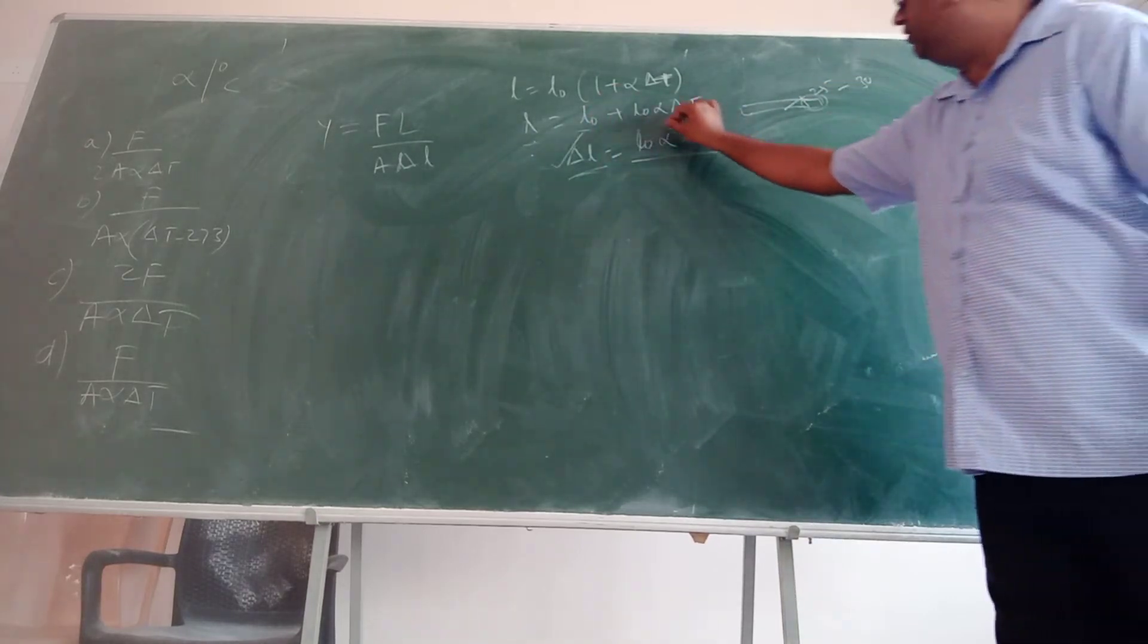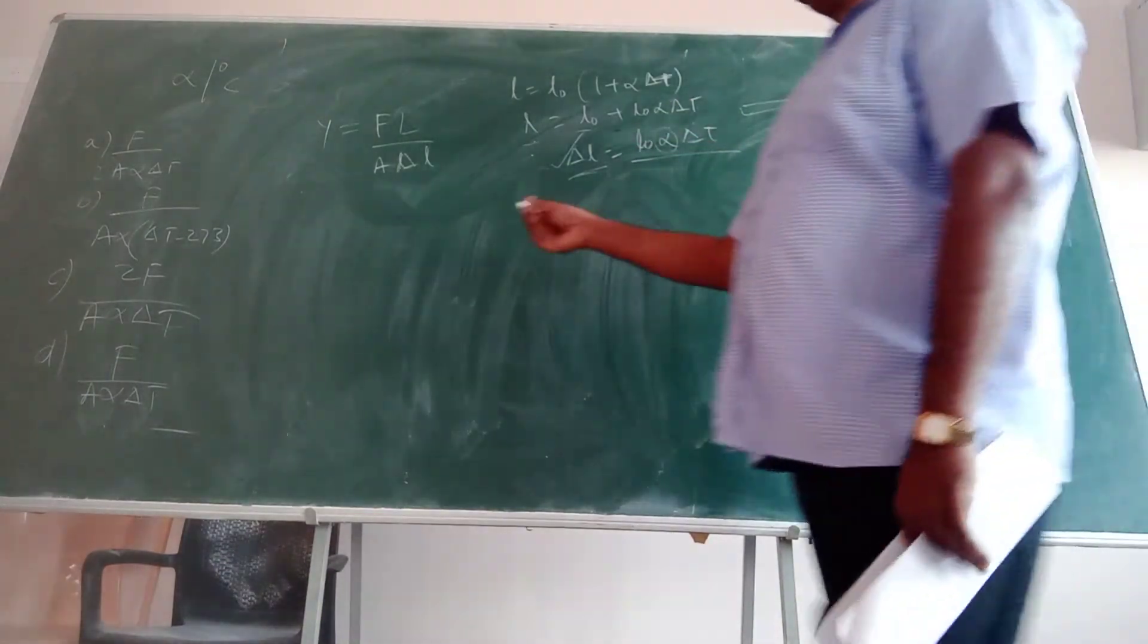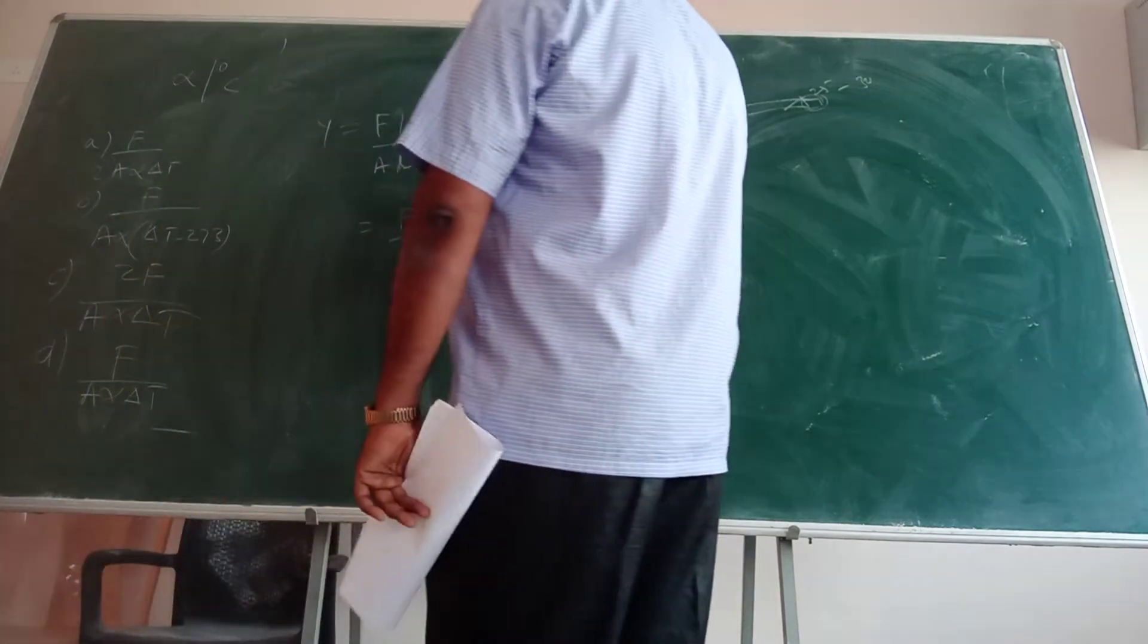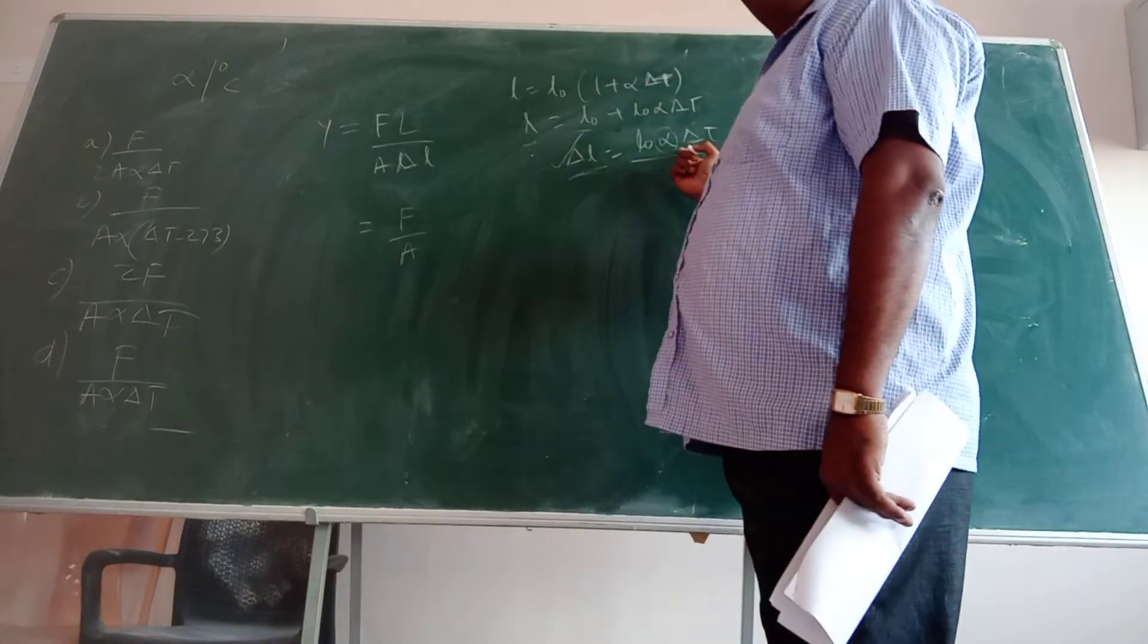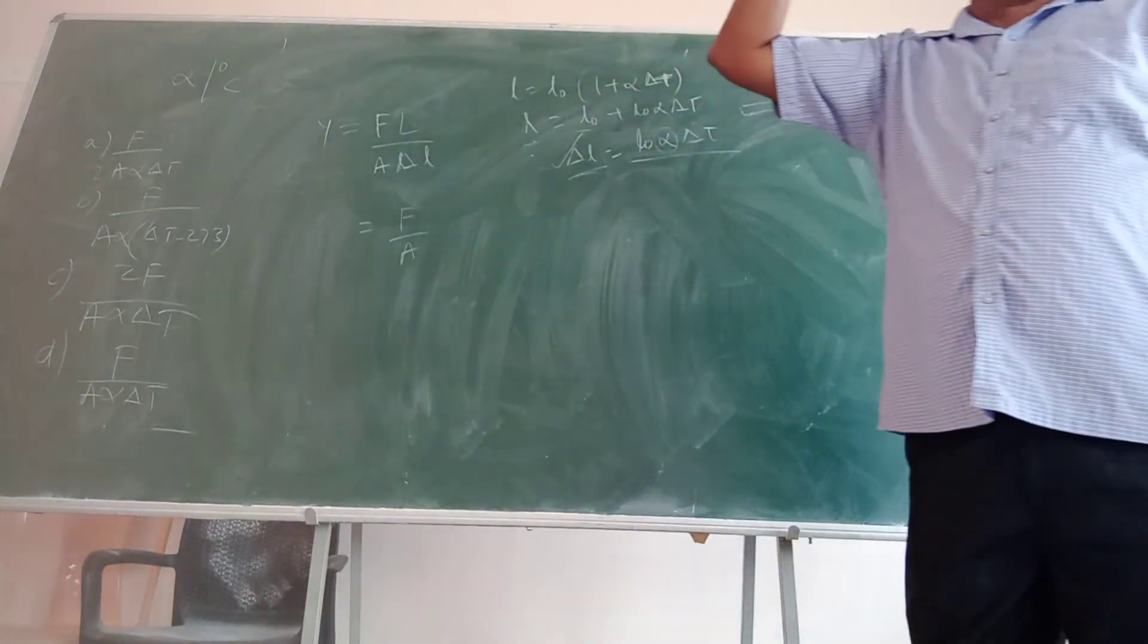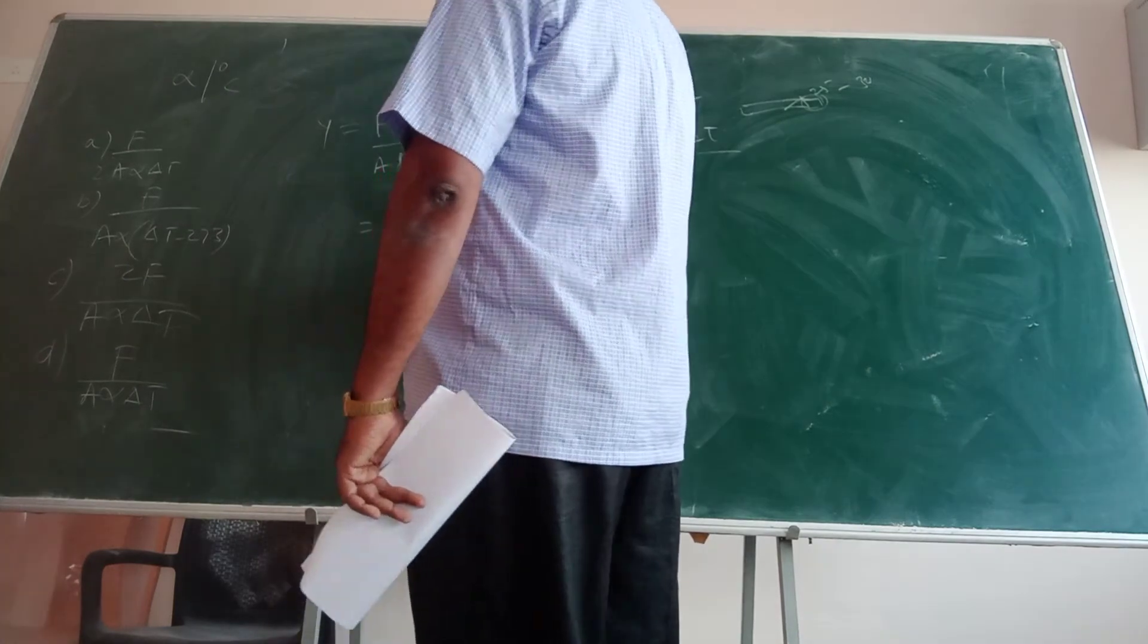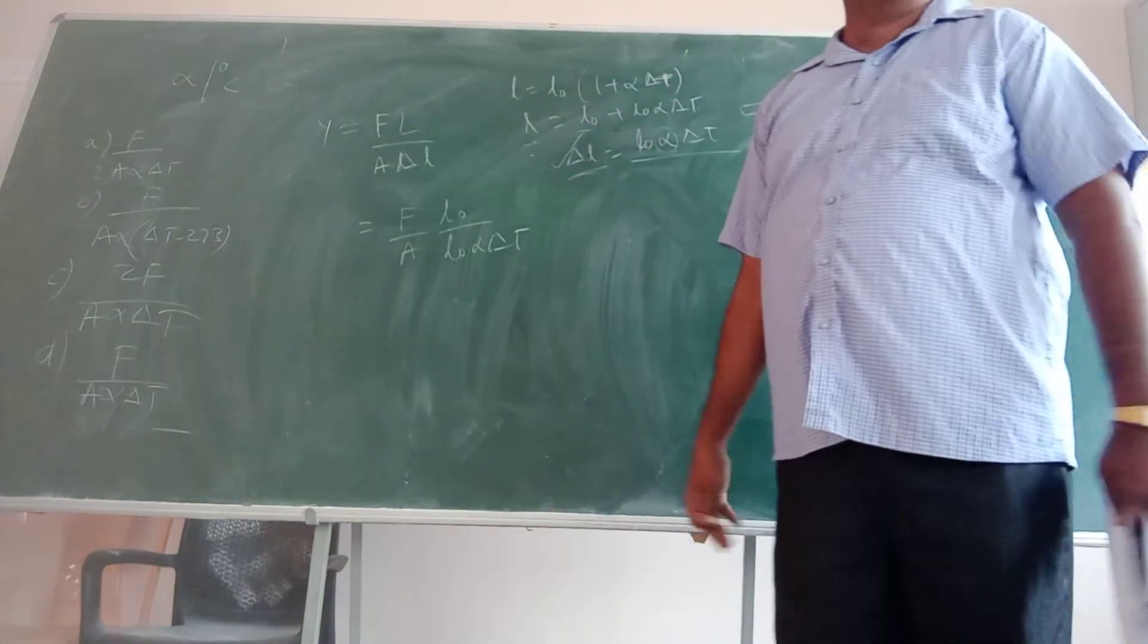Remember, we have to just put F by A. Delta L is what? L into - what is L naught or L, the original length? The original length. So here Y will be F over A divided by L naught alpha delta T. That is it.